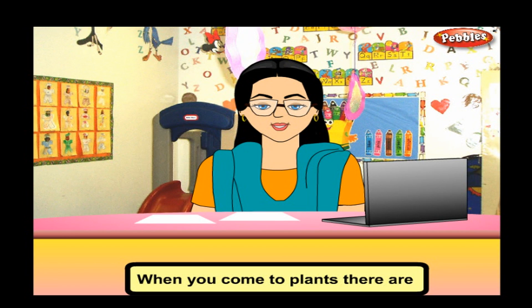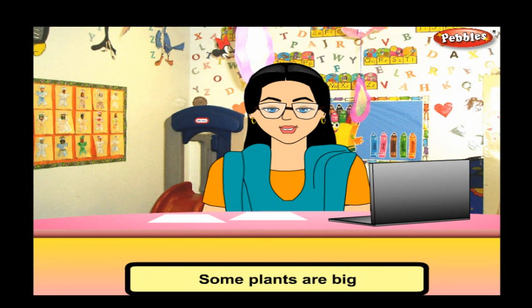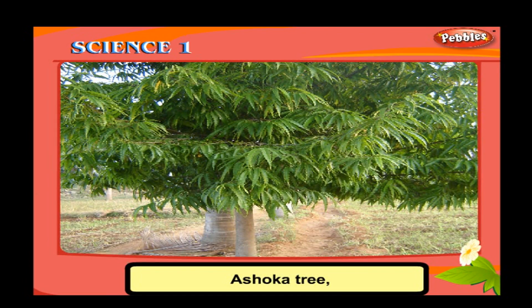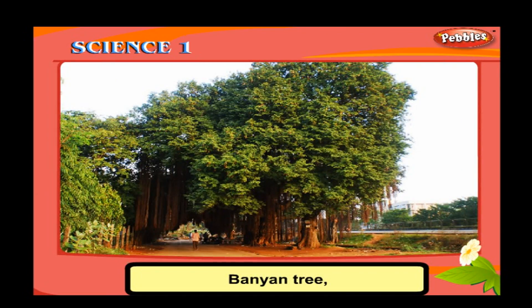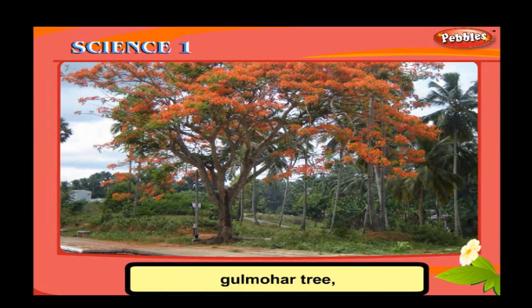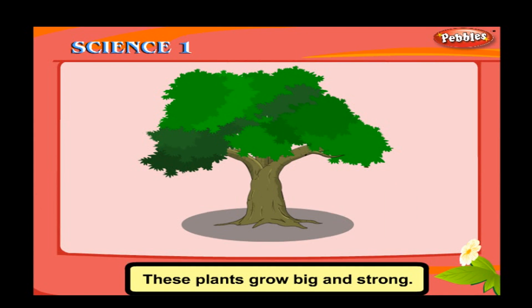When you come to plants, there are a variety of plants in this world. They are of different shapes and sizes, and also different types. Some plants are big and some plants are small. See these trees: Ashoka tree, banyan tree, mango tree, neem tree, coconut tree, gulmohar tree, apple tree, etc. These plants grow big and strong.